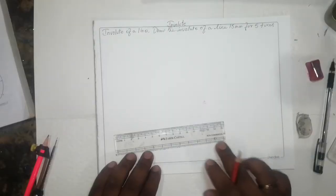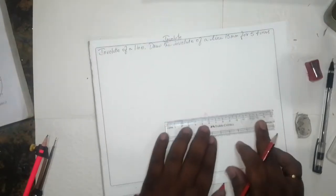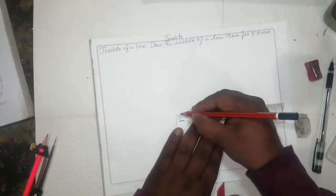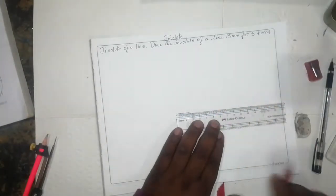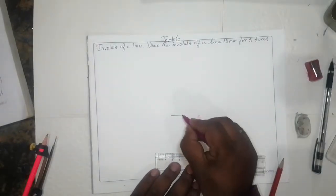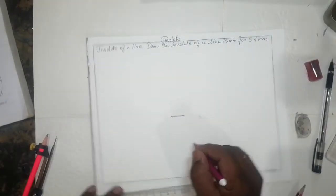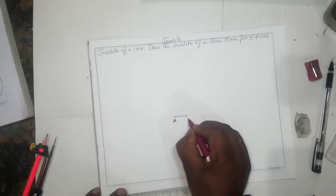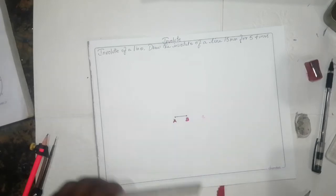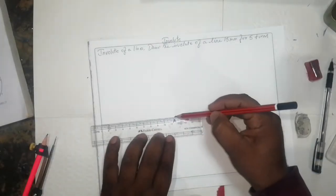Take 15mm like this. You'll get one point A and B, so that extension the random line like this.